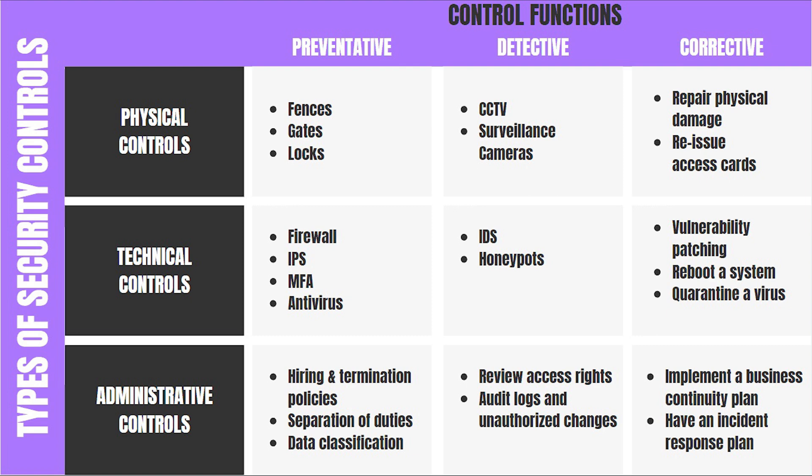An example of a compensating control is having a smaller locker since a company can't afford a vault. For the exam, one must understand where different measures fall within these controls. For example, an intrusion detection system is a technical control but also a detective control. Having an incident response plan is a corrective control but also an administrative control.